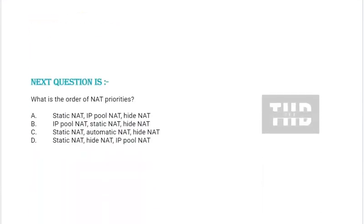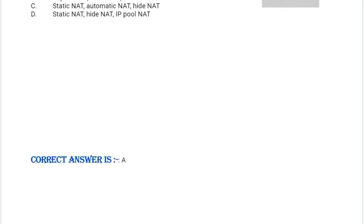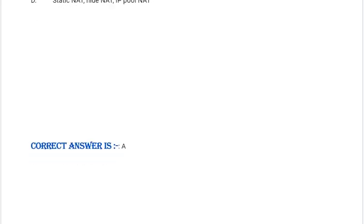Next question: What is the order of NAT priorities? Option A: Static NAT, IP pool NAT, hide NAT. Option B: IP pool NAT, static NAT, hide NAT. Option C: Static NAT, automatic NAT, hide NAT, IP pool NAT. Correct answer is Option A.